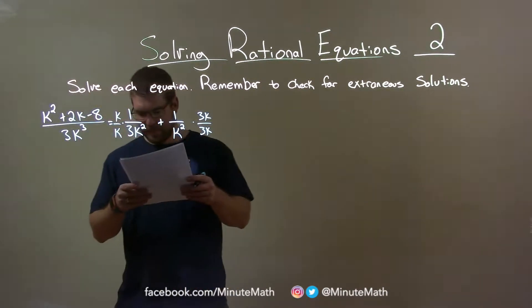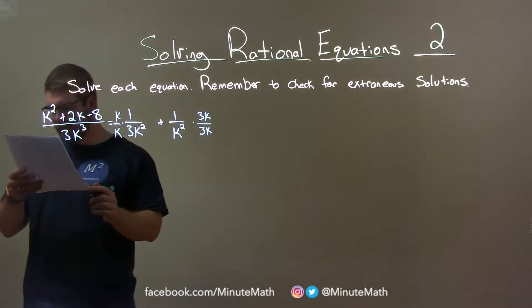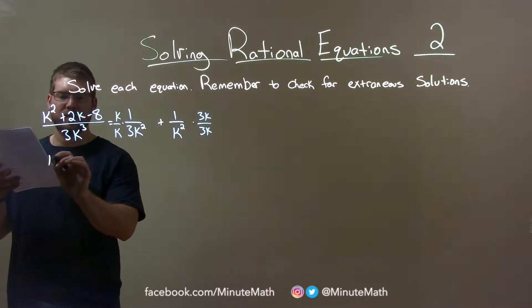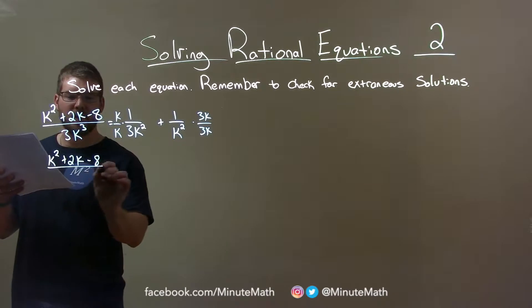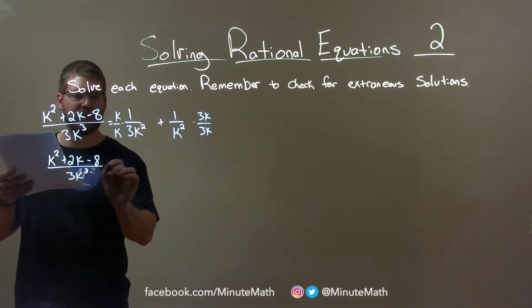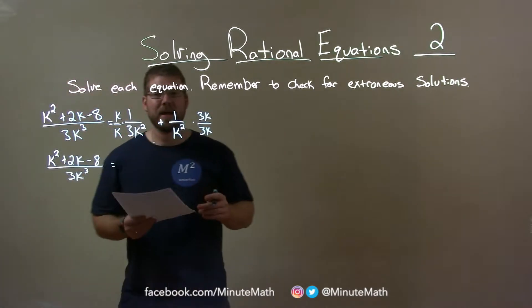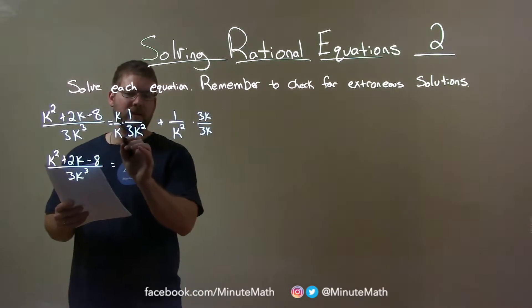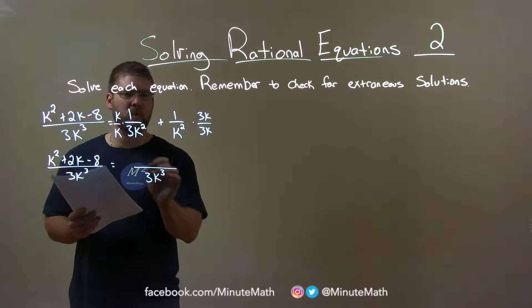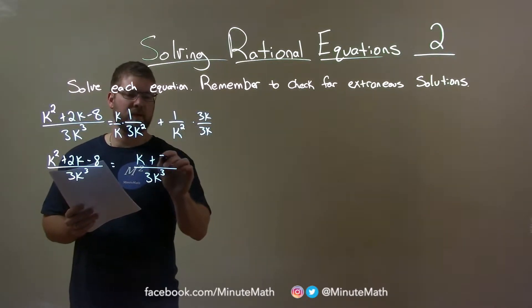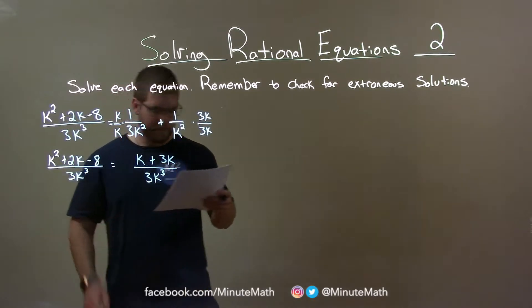So when we multiply this out, we should have the same denominator. So the left-hand side here, I'm going to leave as it is for the moment. We have k squared plus 2k minus 8 over 3k to the third. The right-hand side, we know we're having the goal was 3k to the third power in the denominator. So we're going to put it together as 1: k times 1 is k plus 3k times 1 is 3k.